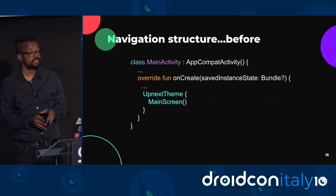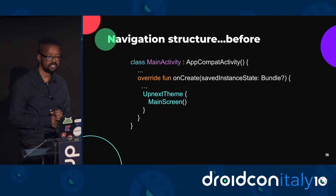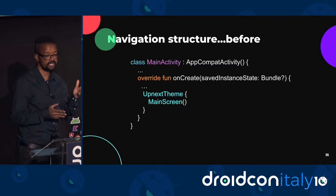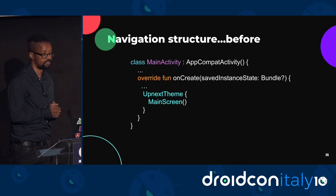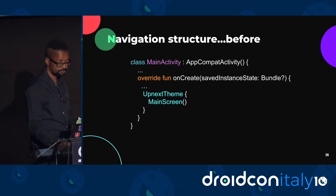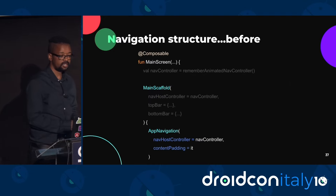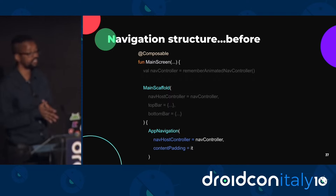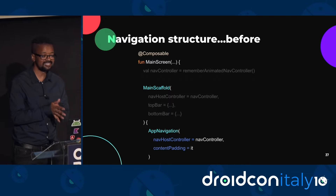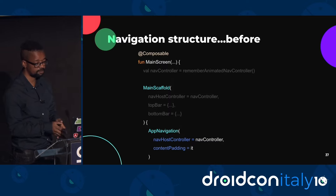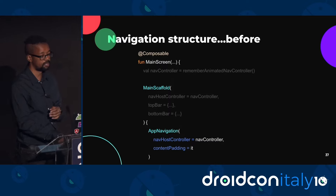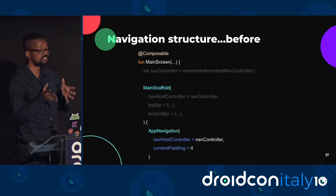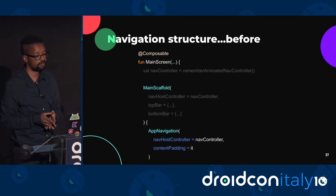My app has only one activity — main activity — and it is here that the main screen composable, which is basically wrapped in the UpNext theme material theme composable, is called. My main screen composable was in charge of setting up the screen that will display the content for the whole app. Inside it is the main scaffold composable, which is a wrapper composable I created that simply sets up the material scaffold composable that houses the top bar as well as the bottom bar slots.